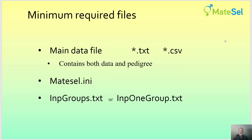The minimum required files for running MateCell are the main data file and then some other parameter files. The main data file contains both your data and pedigree, whereas the parameter files are MateCell.ini, which has a variety of parameters in it. For grouping, where you're classifying animals into different groups, you need this file. And if you're not grouping, you still need a file called imp1group.txt. I'll talk about these three other files in another video.